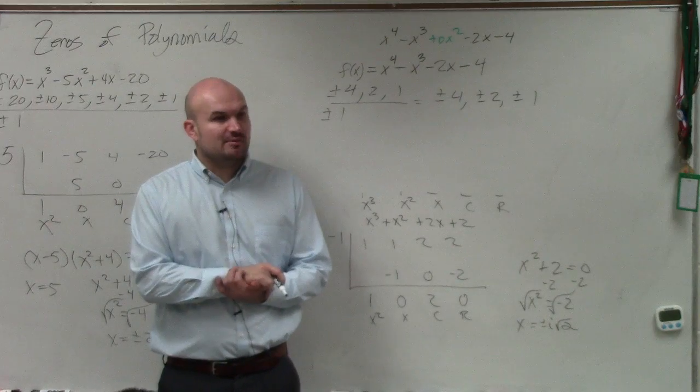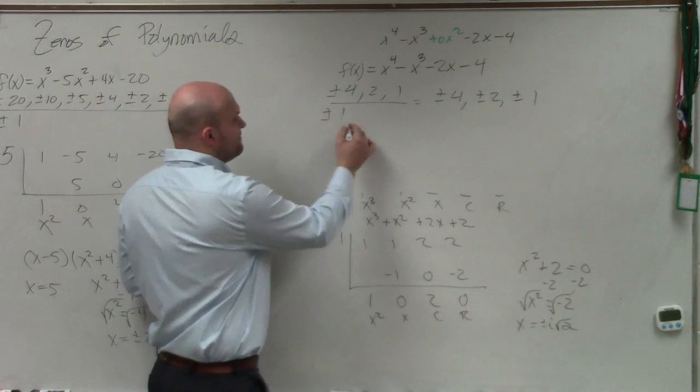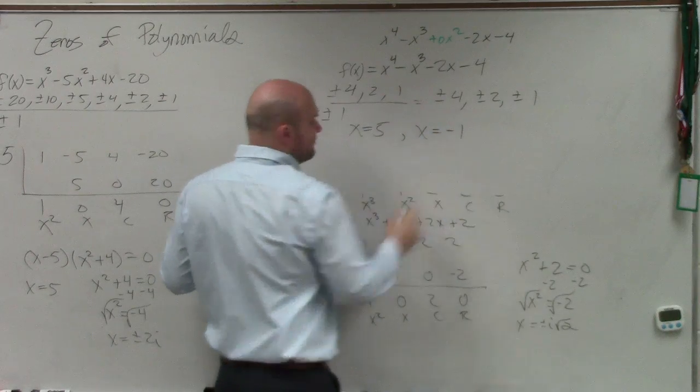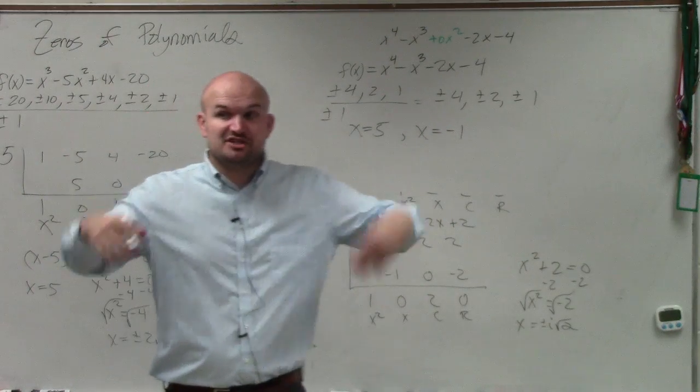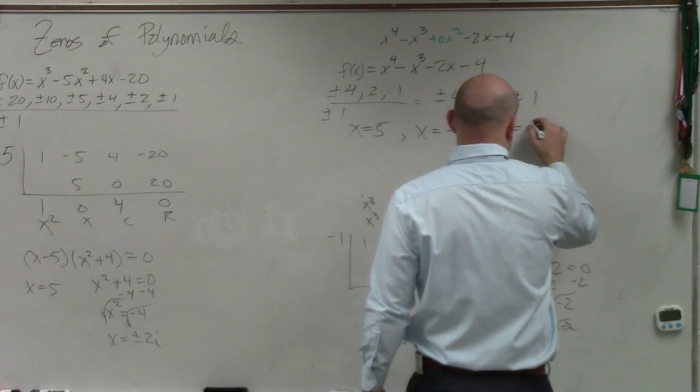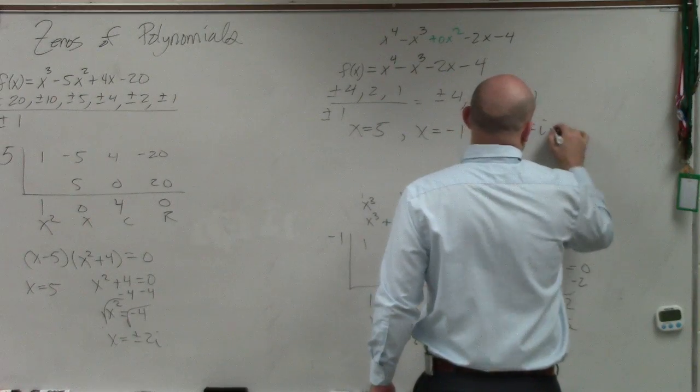So ladies and gentlemen, we found some zeros. By graphing, we found x equals 5. By graphing, we found x equals negative 1. By doing synthetic division twice, we got zeros as x equals plus or minus i square root of 2.